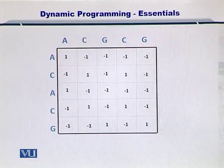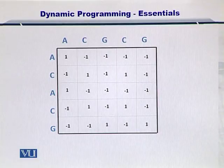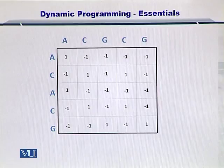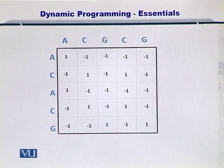Here I have shown you the dot plot, which is modified. The matches have been indicated by one, and the mismatches by minus one.